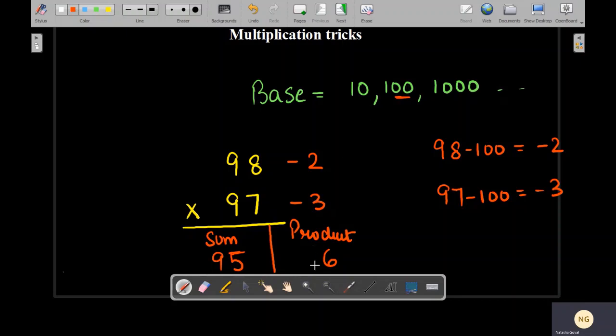make sure that you have to take two digits in the product also. So how to write that? So we'll write a 6 over here and we'll add a 0 over here. So now this is our final answer, 9506.